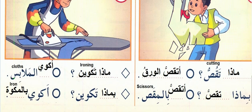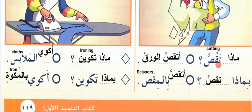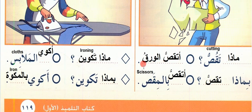The next set of pictures and sentences. Mazat taqsu — what you are cutting? Tataqsu al-ward — I am cutting the paper. With what you are cutting? Atqassu with the scissors. Atqassu means I am cutting.